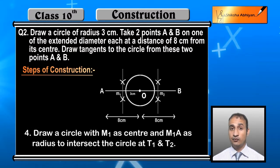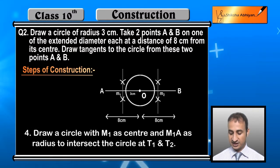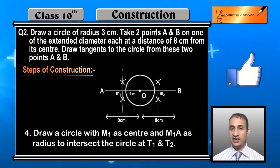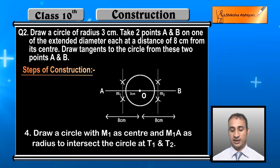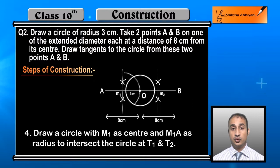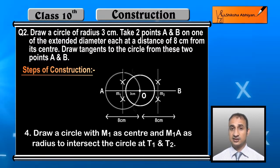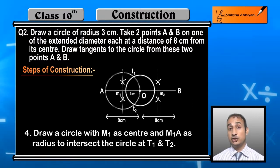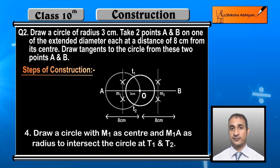Now draw a circle with M1 as center and M1A as radius. Draw it so that it intersects the original circle at points T1 and T2.